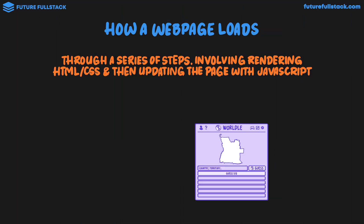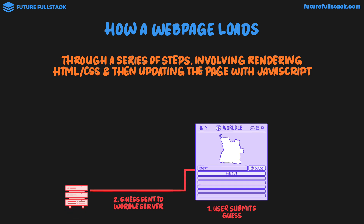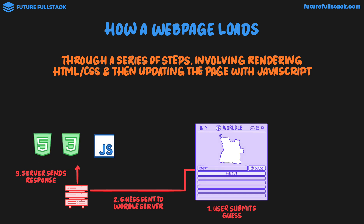The web page initially loads. Step one: the user submits a guess, like Egypt. Step two: the guess is sent to the Wordle server, which applies logic to see how the guess compares to the correct country. Step three: once the server calculates this, it sends a response back to the browser — a package of HTML, CSS, and JavaScript, where the HTML file is linked to a CSS file and a JavaScript file.